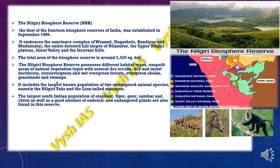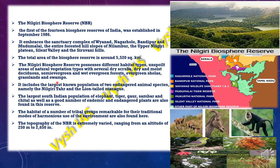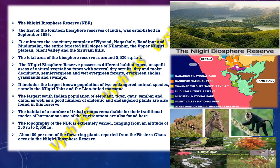Endemic and endangered plants are also found in this reserve. The Nilgiri Biosphere Reserve is the habitat of a remarkable number of tribal groups who follow traditional modes of harmonious use of the environment. The topography is extremely varied, ranging from an altitude of 250 meters to 2650 meters, and about 80% of the flowering plants reported from the Western Ghats are found in the Nilgiri Biosphere Reserve.